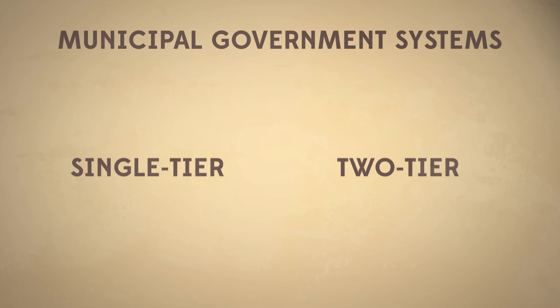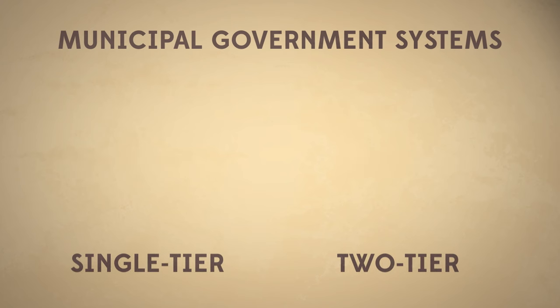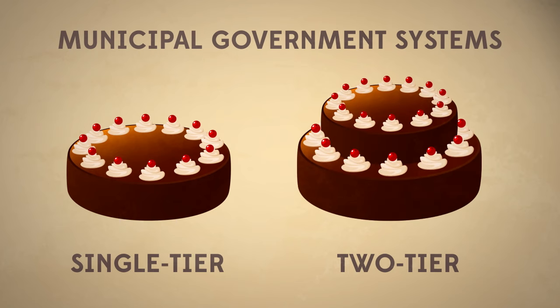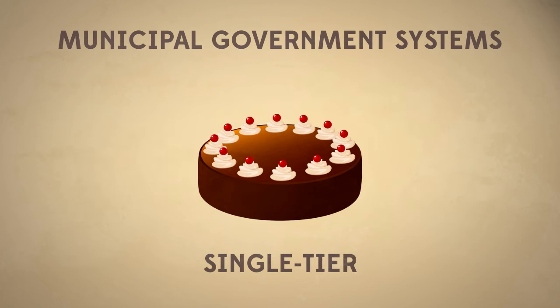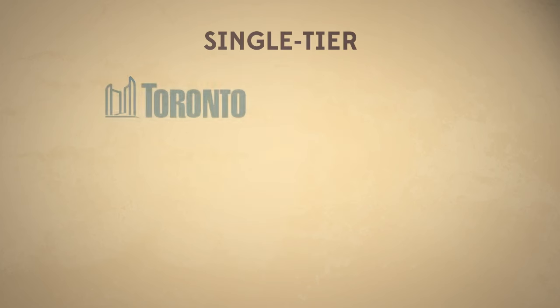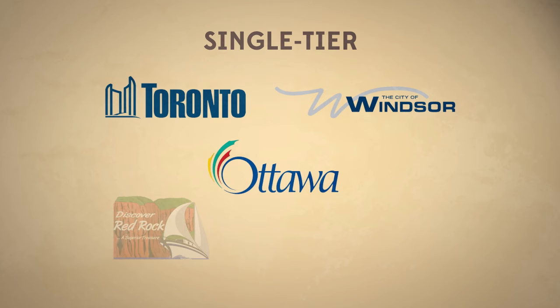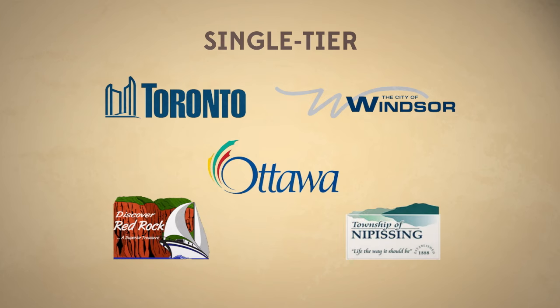A single-tier system has one government with one council. Single-tier municipalities manage all of their responsibilities on their own. Examples include larger cities like Toronto, Windsor, and Ottawa, or smaller townships like Red Rock and Nipissing.